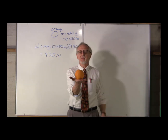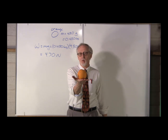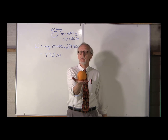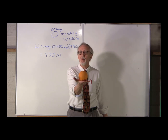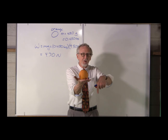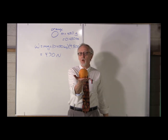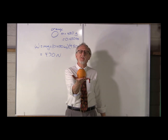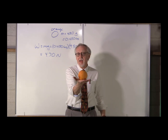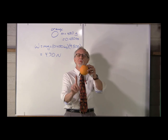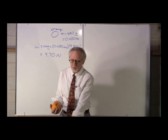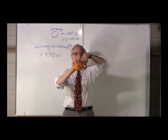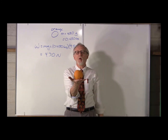If I hold this orange stationary, what is its acceleration? Well, it's not moving, so the acceleration is zero. If the acceleration is zero, the net force acting on the orange must be zero. There is a gravitational force — the weight — acting downward at 4.70 newtons. So where's the other force balancing that? In order to hold the orange stationary, I must push upward with a force of 4.70 newtons. The weight is downward, my force is upward, they balance for a zero net force, and the orange remains stationary.